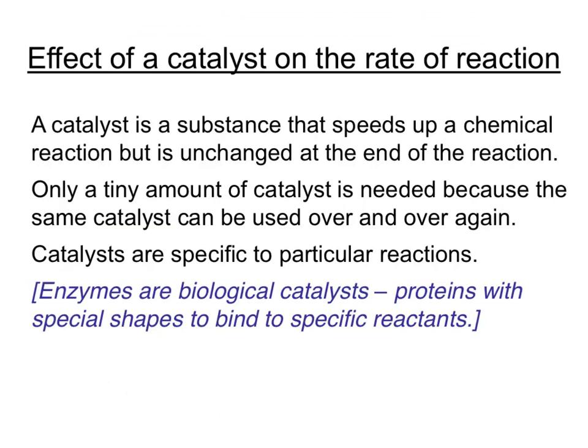If we think back to module C2, we learn that in the Haber process for making ammonia, a specific catalyst is used, which is iron. Various chemical reactions have got various catalysts — it's not one catalyst for every job.